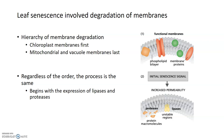We already talked about how leaf senescence involves the degradation of multiple membranes. One of the first things that happens during the initiation phase of leaf senescence is that chloroplasts are degraded, and chloroplast membranes actually degrade first because there's a hierarchy of membrane degradation within leaves — chloroplast membranes degrade first, and then ultimately mitochondrial as well as the central vacuole membranes degrade last. Regardless of which membrane we're talking about, the process of membrane degradation within leaves during senescence is pretty much the same.